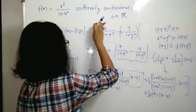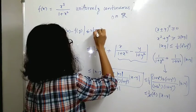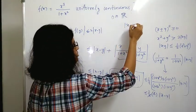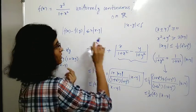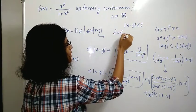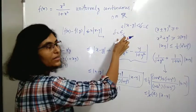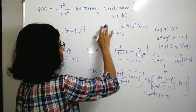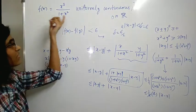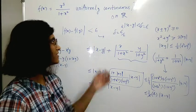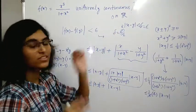Therefore |f(x) - f(y)| ≤ 2|x - y|. Now for any ε > 0, choose δ = ε/2. Whenever |x - y| < δ, we have |f(x) - f(y)| ≤ 2|x - y| < 2δ = ε. Note that δ depends only on ε and not on x or y, so this function f(x) is uniformly continuous on ℝ.